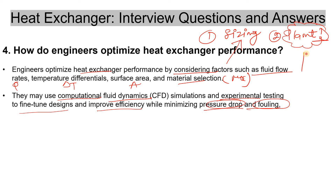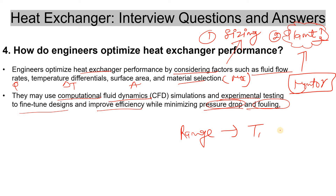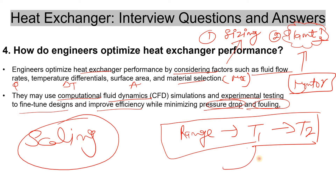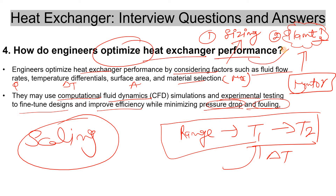When there is a heat exchanger in the plant, engineers optimize by monitoring the temperatures — checking whether the designed delta T is being achieved. If there is some scaling, you can identify it from the temperature readings. Actions include cleaning the tubes, performing hydro jetting, back washing, or chemical cleaning to optimize the heat exchanger already erected in the plant.